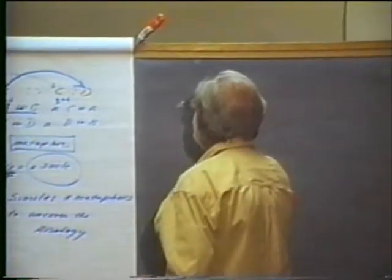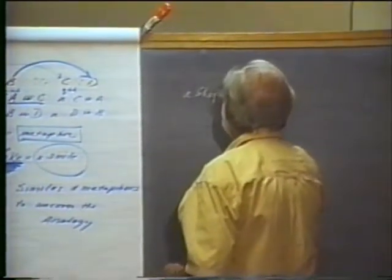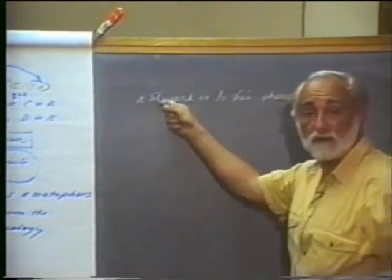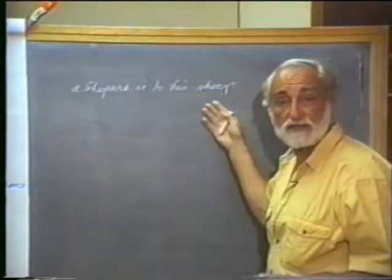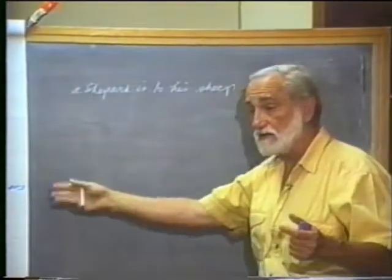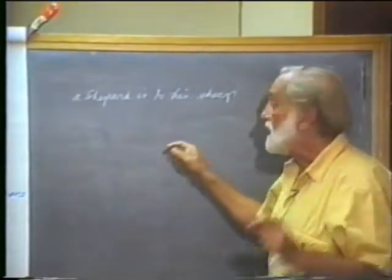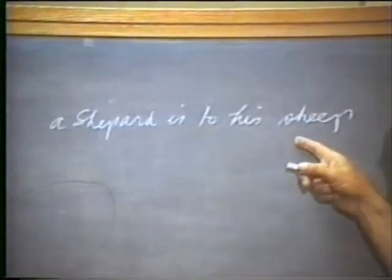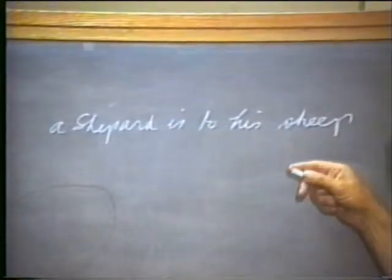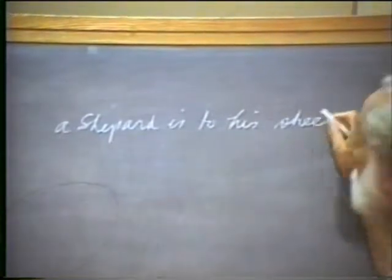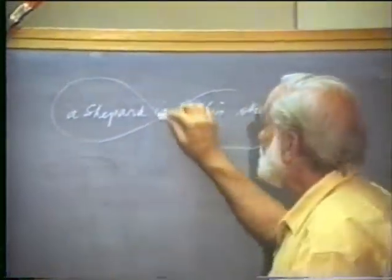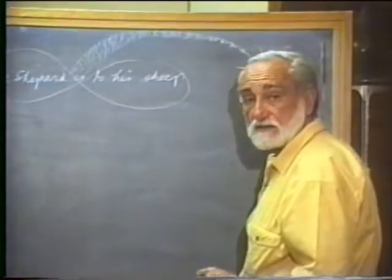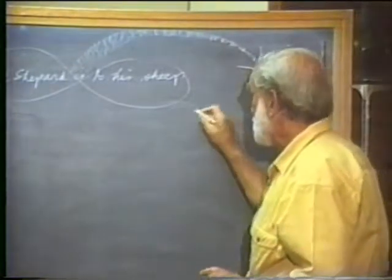A shepherd is to his sheep — that's a meaningful relationship between two terms. It's not just random things. They must have a particular relationship. Whatever the key relationship exists between these two, that same way of relating you are now going to find between another two set of terms. That makes the analogy.